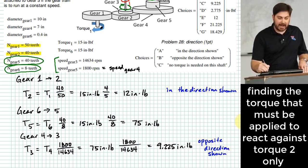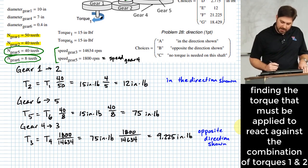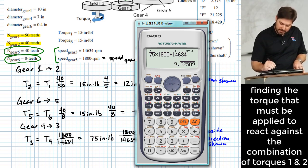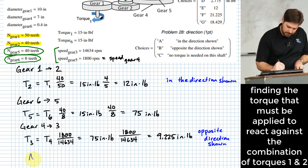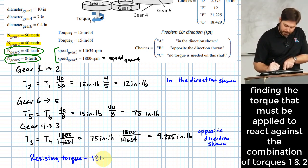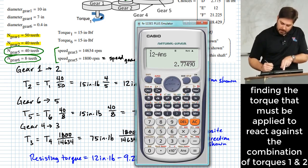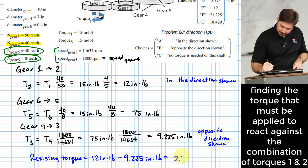So that means we need to subtract these two values, right? And when we subtract the two values, we end up with 12 minus what we just got there. So 12 minus the answer. And that gives me 2.775. So we'll say applied torque, or maybe I should say resisting torque is going to have to be equal to 12 inch pounds minus 9.225 inch pounds. And this is going to be equal to 2.775 inch pounds. What direction?